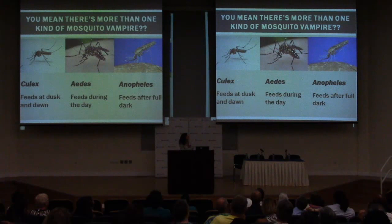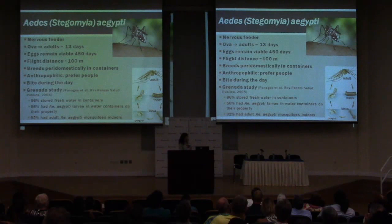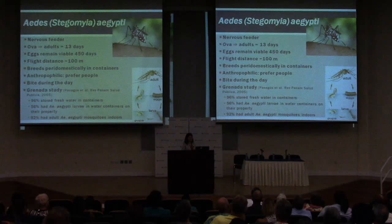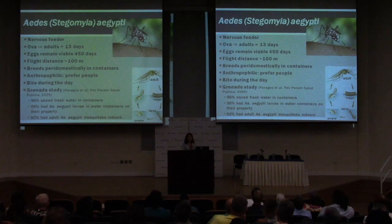Aedes aegypti has really evolved to be a very efficient transmitter of disease to humans. It's a very nervous feeder — a female mosquito seeking a blood meal to lay her eggs will start feeding on one person, and if that person moves she'll jump to another. It may take three, four, or five people before she fills up, making her a very efficient spreader since one mosquito can infect many people. It takes about 13 days for Aedes to complete its cycle from eggs through larvae, pupae, and into adults.